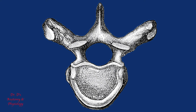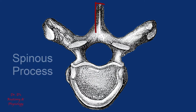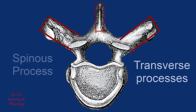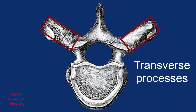From this perspective we can see the spinous process, which extends from the top of the neural arch, and the transverse processes, which extend from the sides of the neural arch at the place where the pedicles meet the laminae.